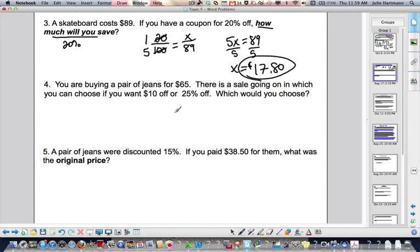All right? Number 4, you are buying a pair of jeans for $65. There's a sale going on in which you can choose if you want $10 off or 25% off. Which would you choose? Well, $10 off. That's one way to look at it. Or 25%. Let's figure out what 25% is. And then you'll know, where do you get more off?